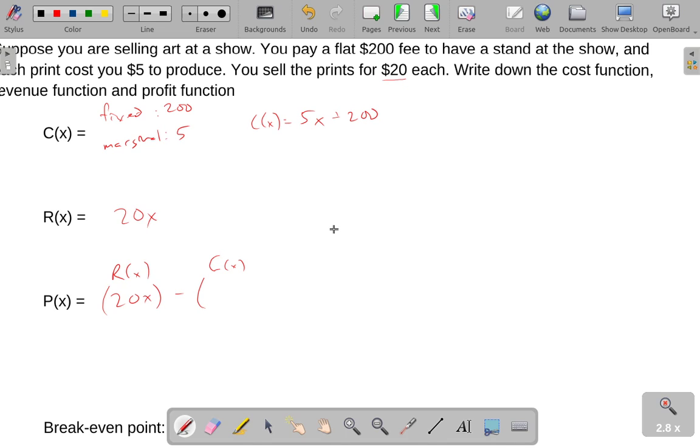I'm doing the 20x in parentheses and the 5x plus 200 in parentheses because I really don't want you to forget that you need to distribute this negative. 20x minus 5x minus 200. Otherwise you might think you've earned $200, when actually you're $200 in the hole because that's how much it cost to get a stand. Let's simplify this: 20x minus 5x is 15x minus 200.